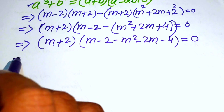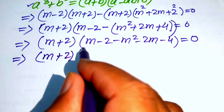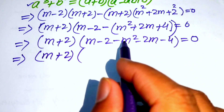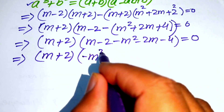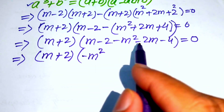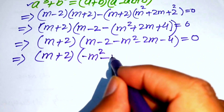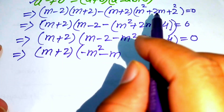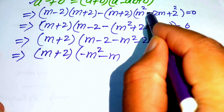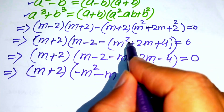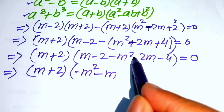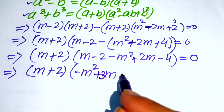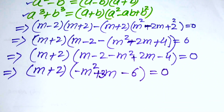After simplifying and combining like terms — noting the minus sign makes certain terms positive — we get (m plus 2) times (minus m squared plus 3m minus 6) equals 0.